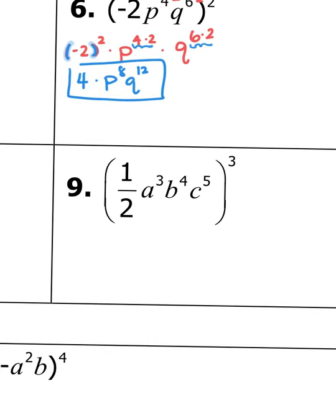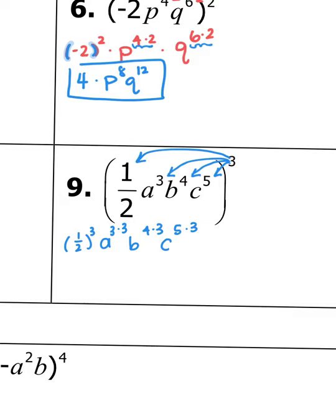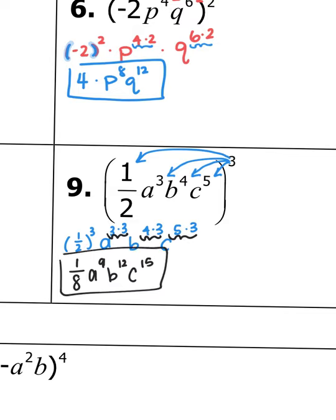For number nine, I'm going to distribute this three. I'll do one half raised to the third power, a to the third power to another third power so three times three, b to the fourth times three, and c to the fifth power raised to the third power so five times three. In your calculator, do parenthesis one divided by two, close parenthesis, caret three, and hit math, enter, enter — you should get one eighth. A has a power of nine since three times three is nine, b is raised to a power of twelve since four times three is twelve, and c is raised to a power of fifteen since five times three is fifteen.